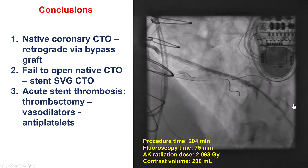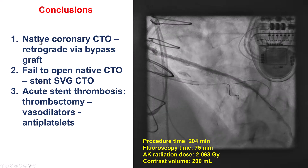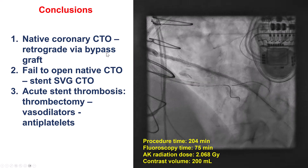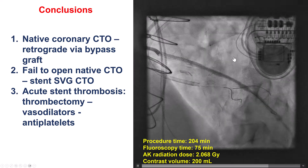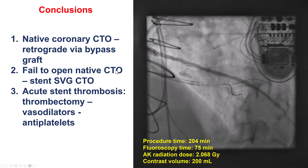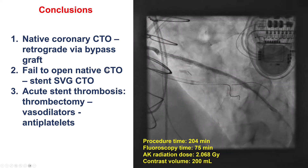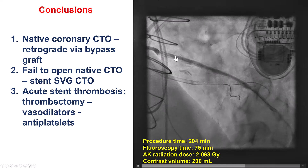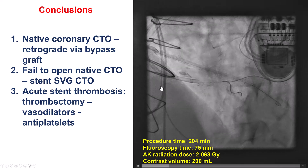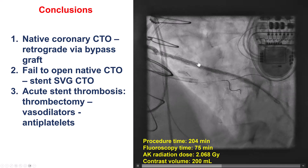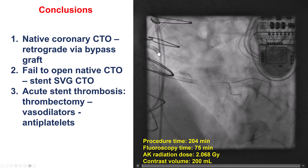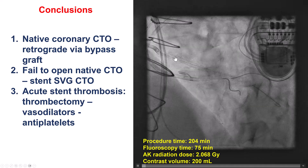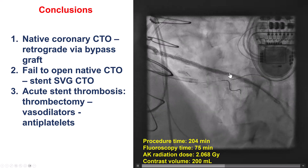Several lessons from this case. The first is that although the goal is always to open the native coronary CTO if possible, in this case we ended up opening the CTO of the vein graft instead because we simply could not recanalize the native vessel or determine its course. There are some data from the PROCTOR study that treating the vein graft in patients who have both vein graft and native lesions is advantageous — though that study excluded CTO vein grafts. This patient is doing well almost a year out, which is encouraging.